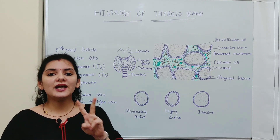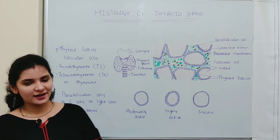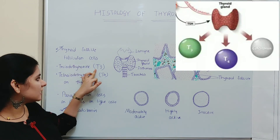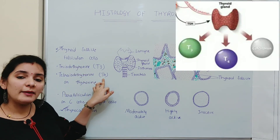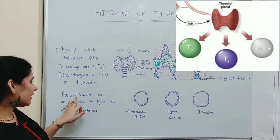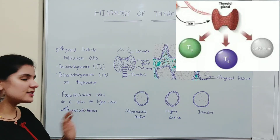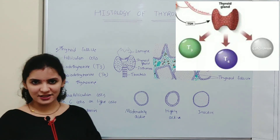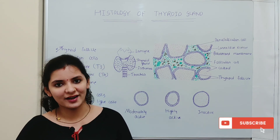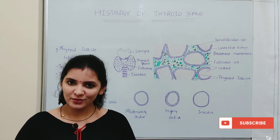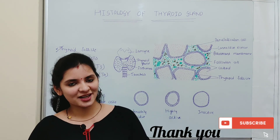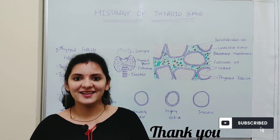So these are the two types of cells present in the thyroid gland: follicular cells, which release T3 and T4 hormones that maintain the rate of metabolism of the body, and parafollicular cells, which release thyrocalcitonin. That is all about the histology of the thyroid gland. I hope this video will be useful. If you like this video, please hit the like button and subscribe to my channel. Thank you.